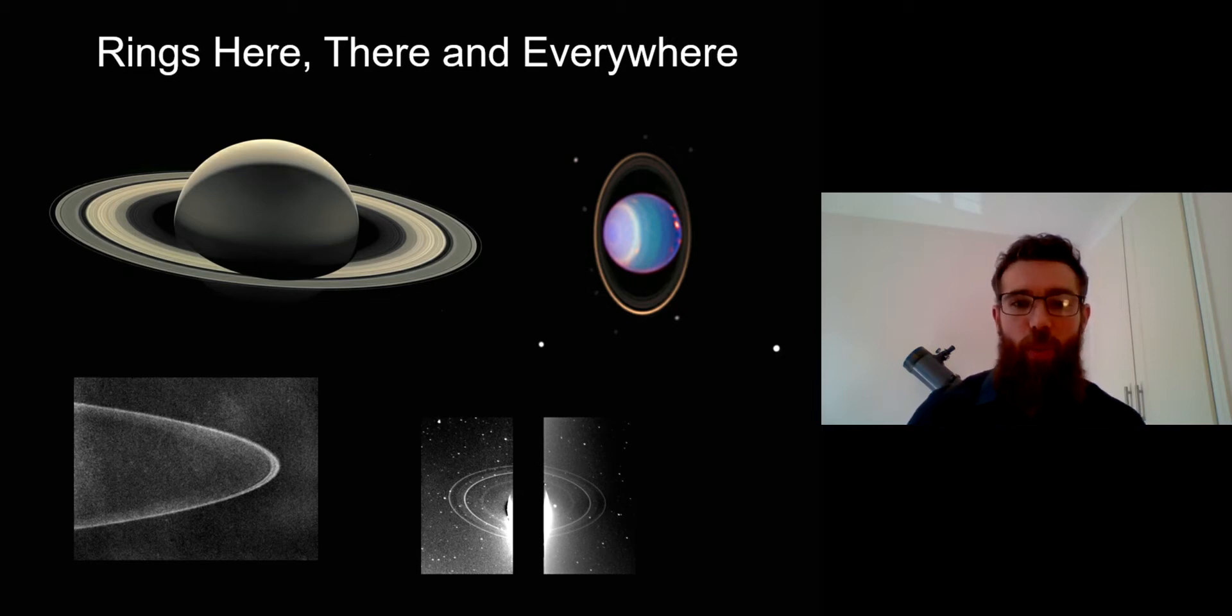So with Saturn, that's the one we're going to look at and note a couple of its key properties, but they do all have these ring systems, these outer giant planets.